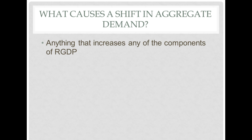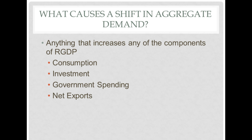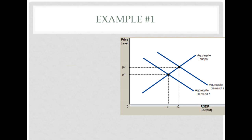This is actually a very easy lesson to cover because we already know the answer on some level. The answer is anything that causes a change in RGDP — that is consumption, investment, government spending, and net exports. If any of those things are increasing, then people have more demand for our GDP and aggregate demand is going to shift to the right.